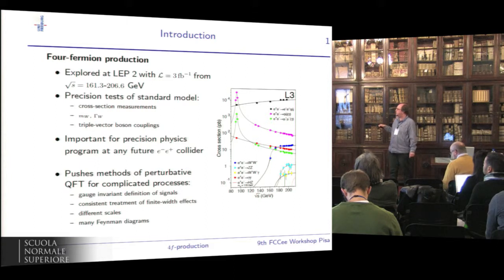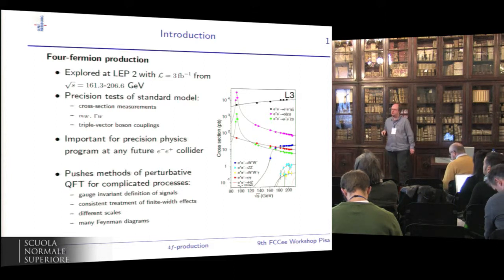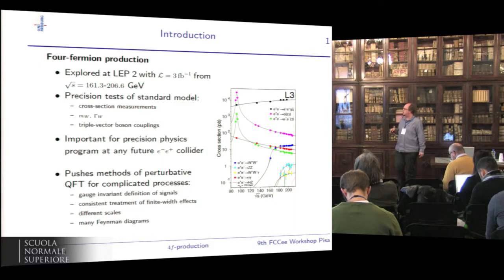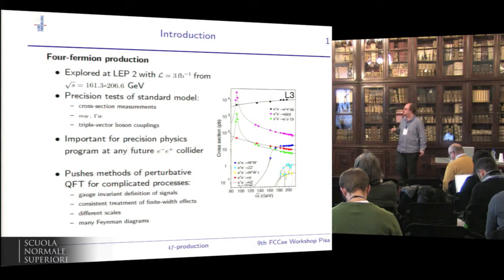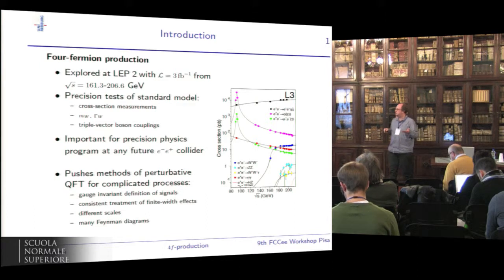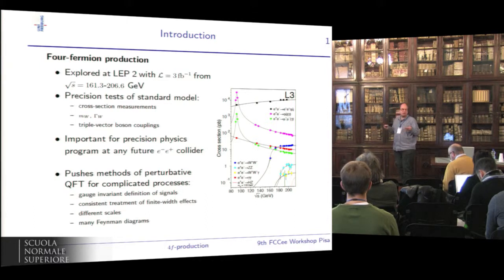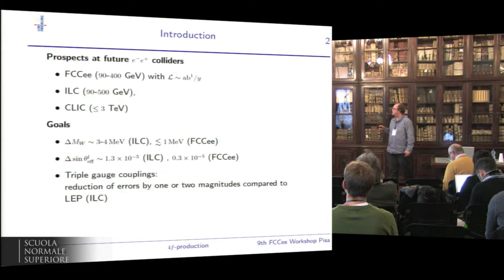A consistent gauge-invariant definition of signals like W pair production is not trivial. This is related to the fact that we need to be able to treat finite width effects consistently. We have processes with different scales, many Feynman diagrams, and all of this complicates the theoretical description.